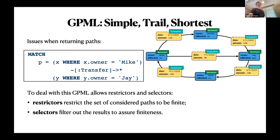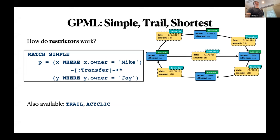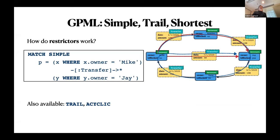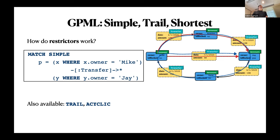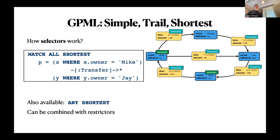Restrictors restrict the set of considered paths to ensure finiteness. The restrictors are SIMPLE and TRAIL. SIMPLE means a simple path: nodes don't repeat except maybe the first and last, so simple cycles are allowed. TRAIL — like in Cypher — means no repeated edges; notice we can traverse a node twice but no edge is traversed twice, which similarly ensures finiteness. There is also ACYCLIC, where even the first and last nodes are not allowed to repeat.